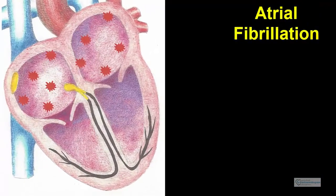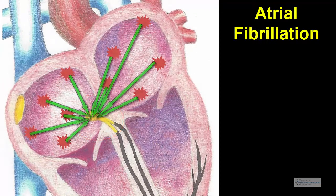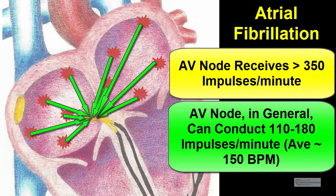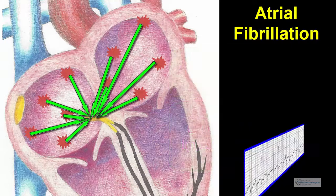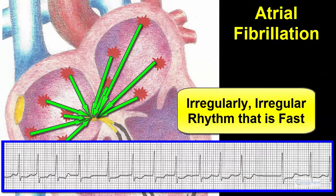This is what happens to the AV node with atrial fibrillation. The AV node is bombarded by over 350 impulses from all over the atria. It can handle about 150 of them, but cannot handle all of them. Hence, we see an irregularly irregular rhythm that is fast.